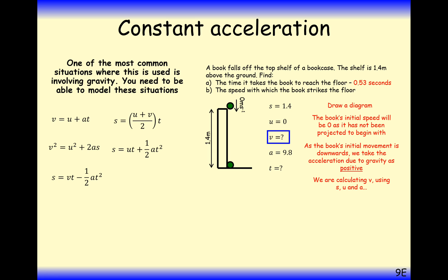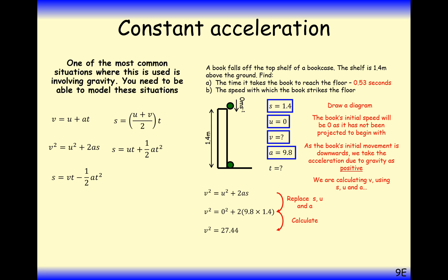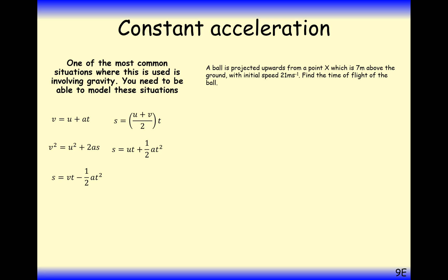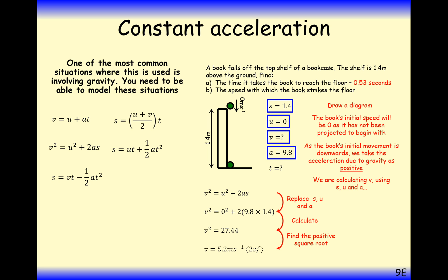Next we need to find the speed at which the book hits the floor. We could use T equals 0.53, but it would be more accurate to use the other known values. Using V squared equals U squared plus 2AS, we get V equals 5.2 metres per second.